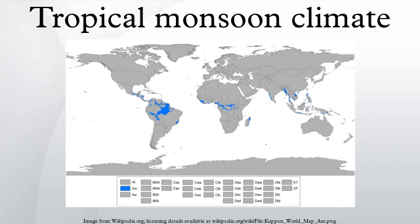Tropical monsoon climates are most commonly found in South and Central America. However, there are sections of South Asia, Southeast Asia, Africa, the Caribbean, and North America that also feature this climate.